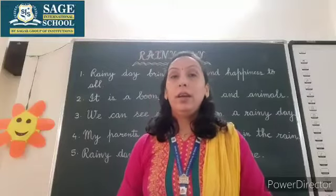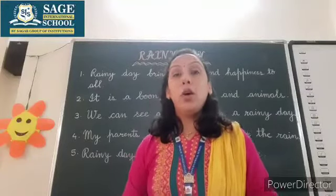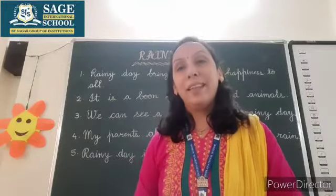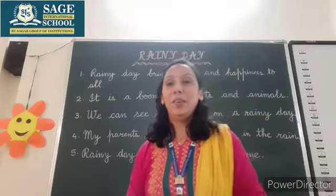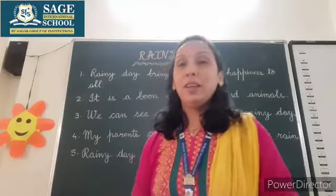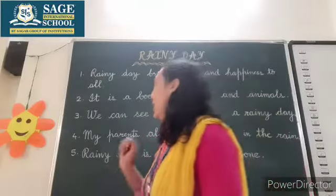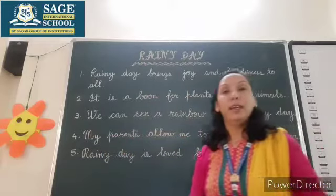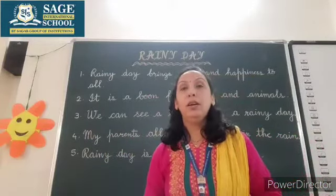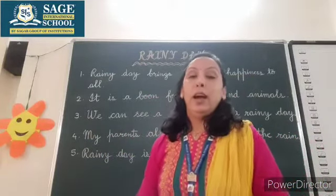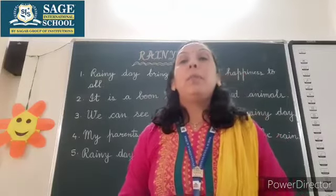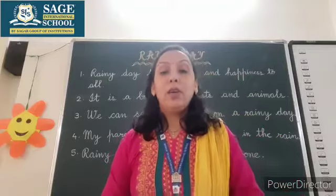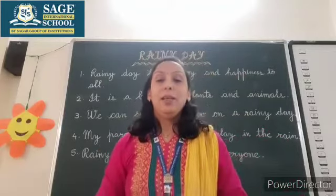Do you know how many colors are there in a rainbow? Yes, seven colors — very good! There are seven colors in a rainbow. So the third line I have written is: 'We can see a rainbow on a rainy day.' And what happens? It brings happiness for those who love to take a shower in the rain.